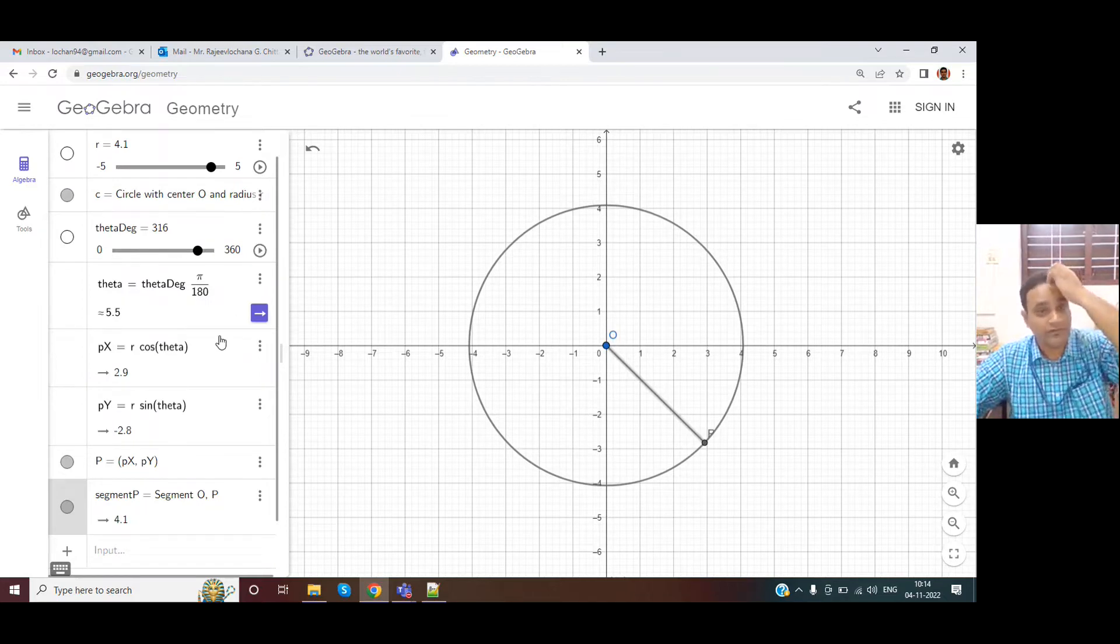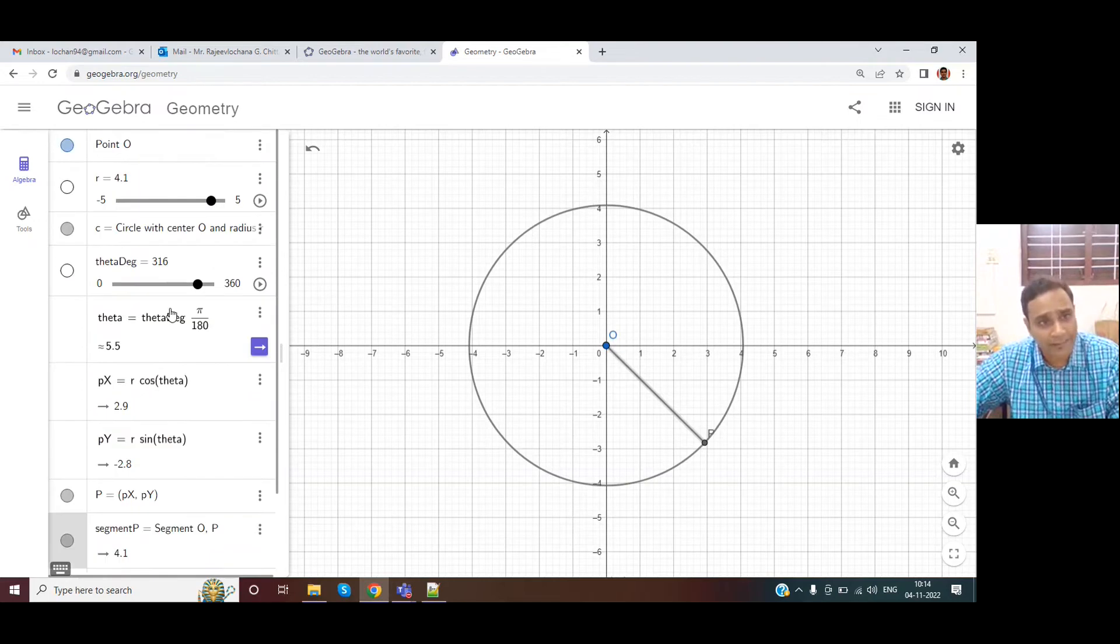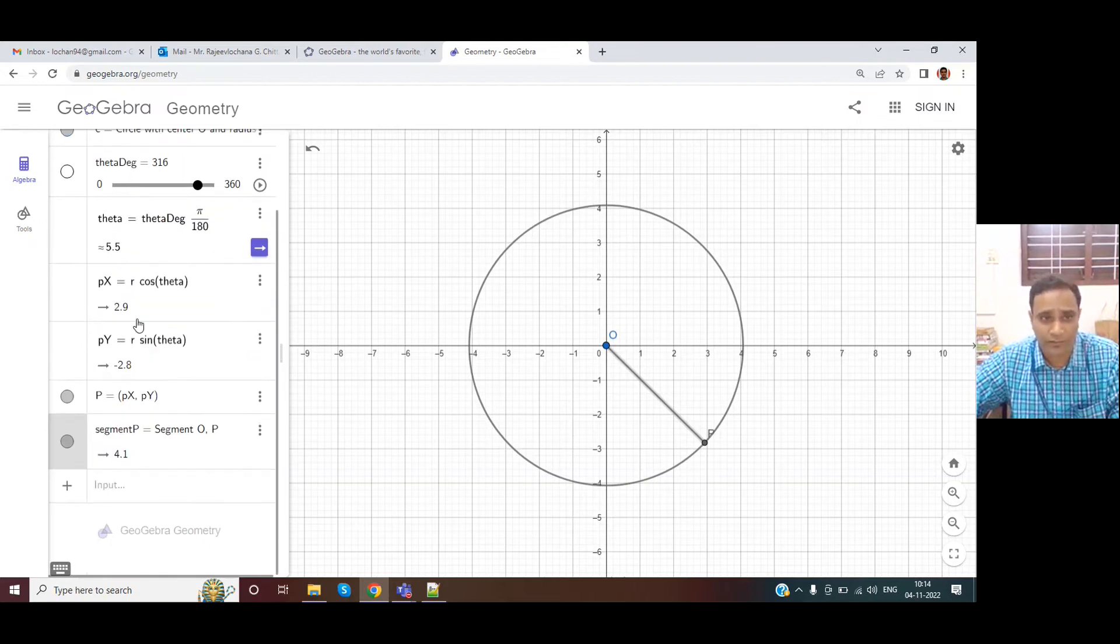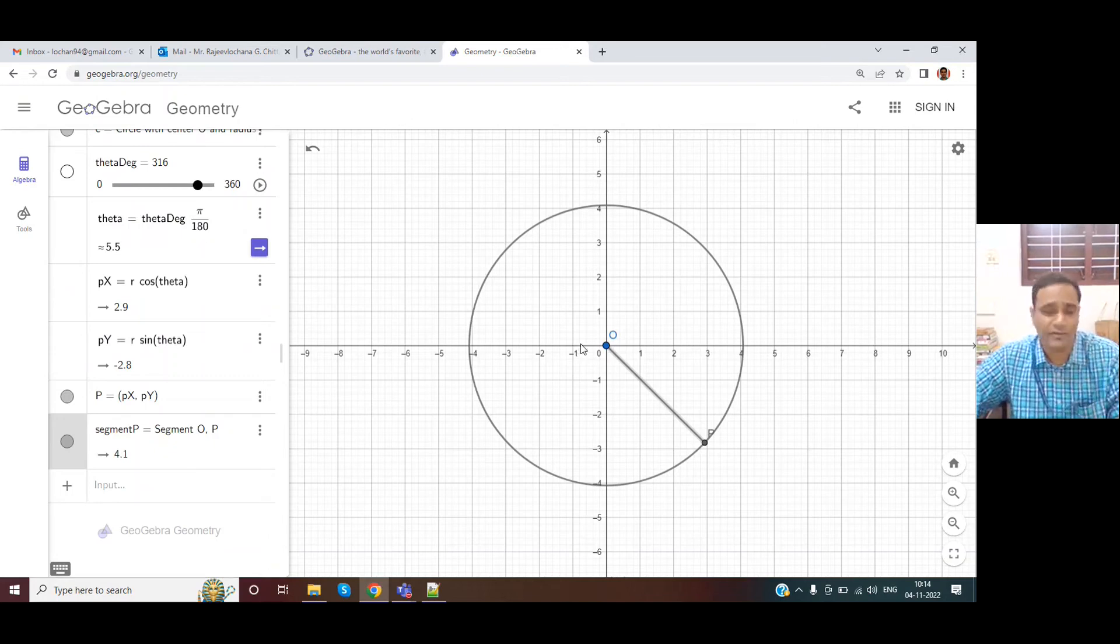However, when the radius becomes positive, we'll have the circle being drawn. Now this is regarding how we can use some variables in the form of theta and radius and draw some geometry.